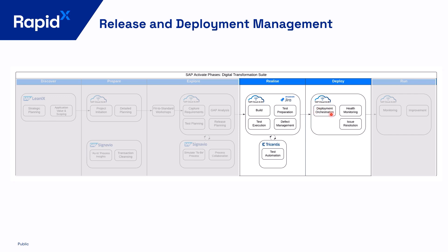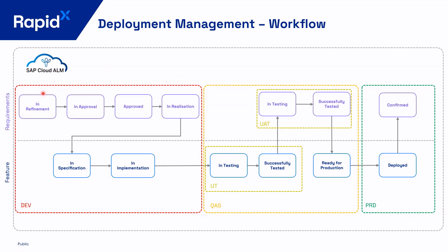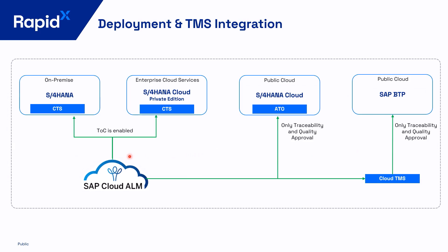When it comes to the workflow, we have a requirement — a transaction used by the business to define what changes they want to perform as part of the project implementation. Then we have the feature, integrated with the requirement, to allow tracking of any particular changes in a landscape. When development activities are completed, we move to the QA environment, running unit testing, user acceptance testing, and regression testing. When that's completed, the change manager reviews all documentation and testing and approves the release for production.